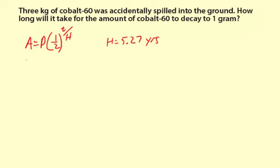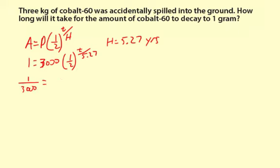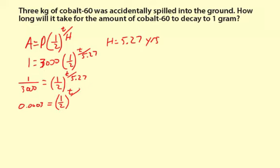The amount we're looking for, A, is one gram. So let's fill in the formula: 1 equals 3,000 times one-half to the t divided by 5.27. Our goal is to solve for t. Dividing both sides by 3,000, we get 1 divided by 3,000 equals one-half to the t divided by 5.27. Writing the left side in decimal form: 0.0003 equals one-half to the t divided by 5.27.